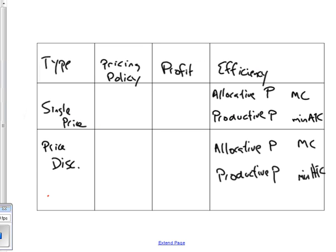But let's just look at this chart here and try to compare and contrast based on pricing policy, profit, and efficiency. So a single price monopoly has monopoly power. I'm just going to write no power. So it can name its price. Price discriminating monopoly also has monopoly power. It can name its price.